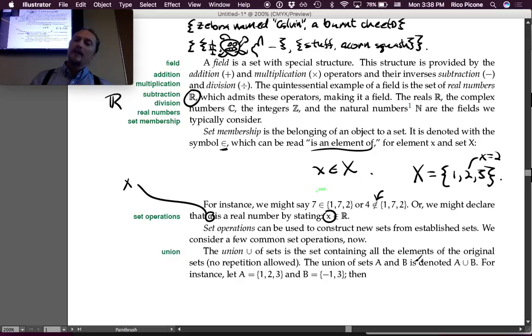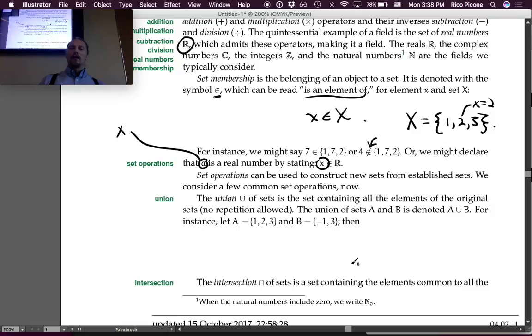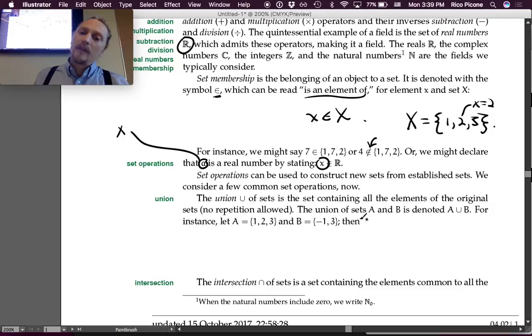Set operations can be used to construct new sets from established sets. We'll consider a few common set operations now. The union, which is denoted with this U-like symbol. The union of sets is the set containing all the elements of the original sets, no repetitions allowed.